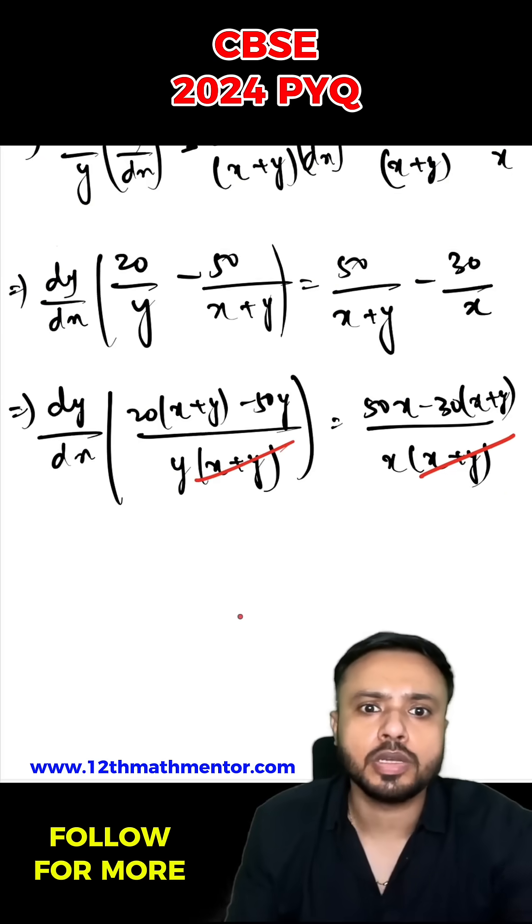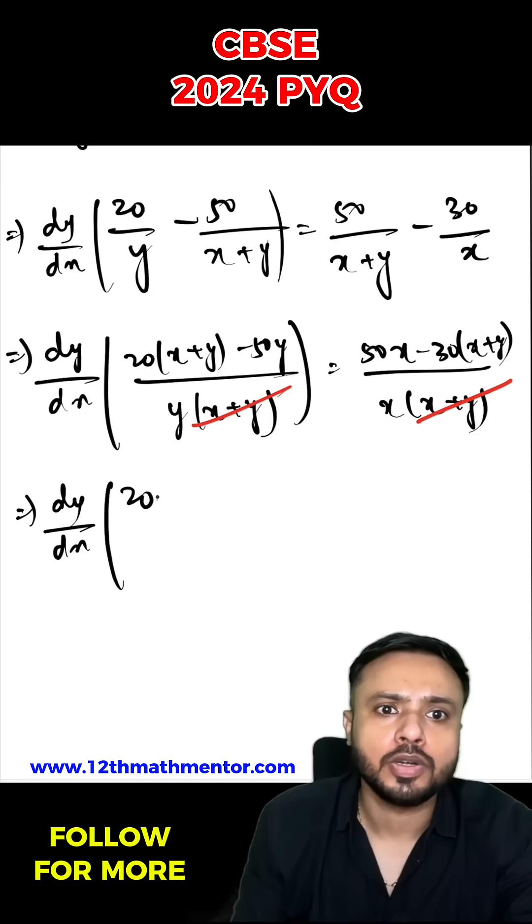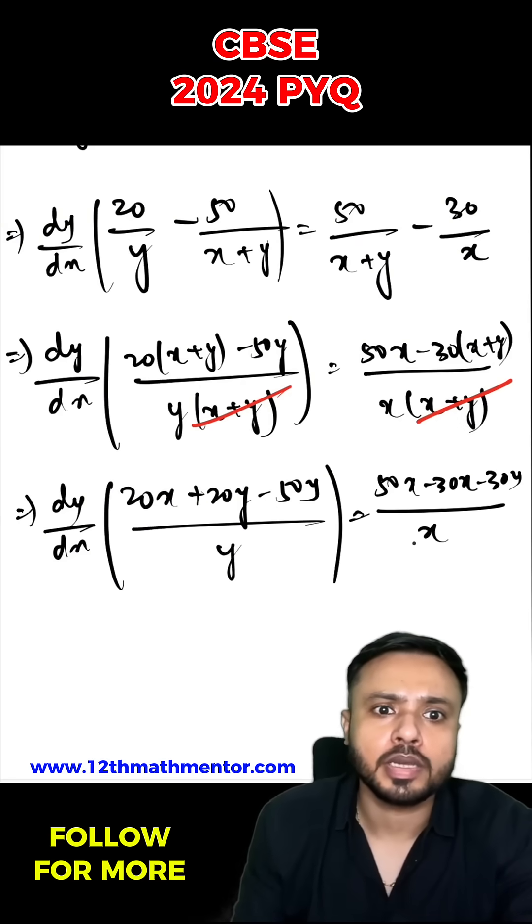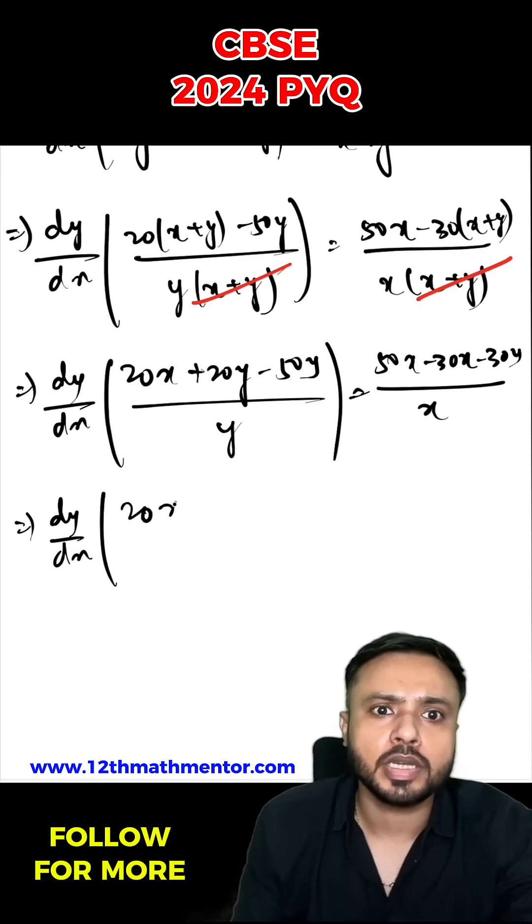So I'll simplify it further. So dy upon dx, 20 x plus 20 y minus 50 y upon y is equal to 50 x minus 30 x minus 30 y upon x. So dy by dx, 20 x minus 30 y upon y equals to 20 x minus 30 y upon x.